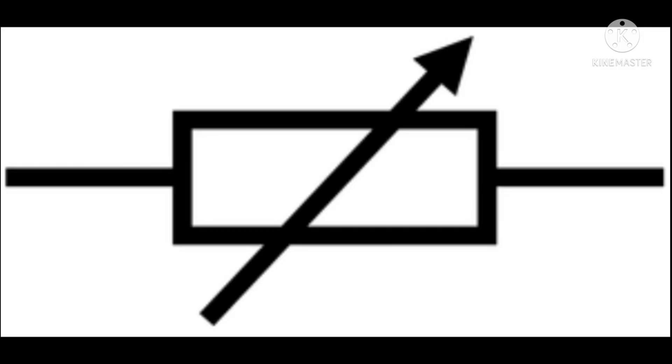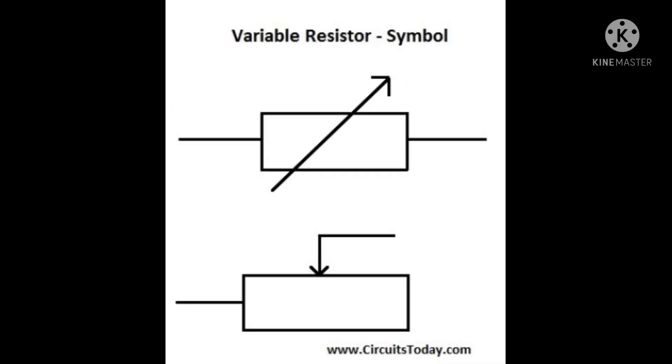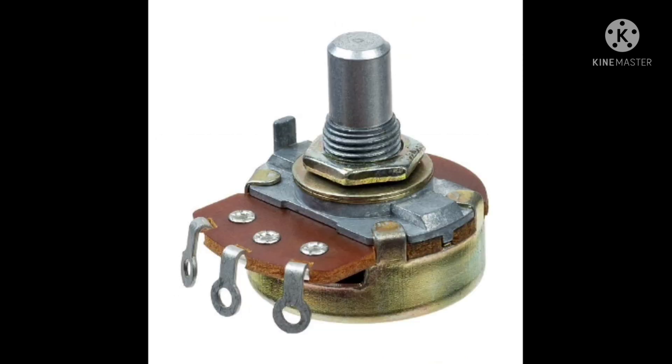A variable resistor is a resistor of which the electric resistance value can be adjusted. A variable resistor is in essence an electromechanical transducer and normally works by sliding a contact wiper over a resistive element.